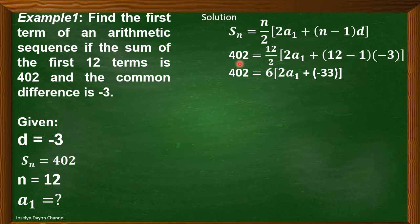Now, let's simplify. So, just bring down 402. 12 divided by 2 is 6 times the quantity of 2a sub 1 plus, we will simplify this one.